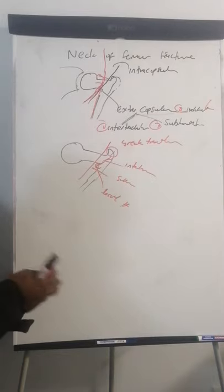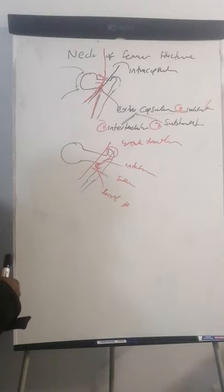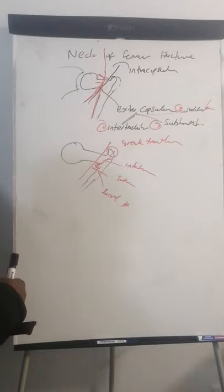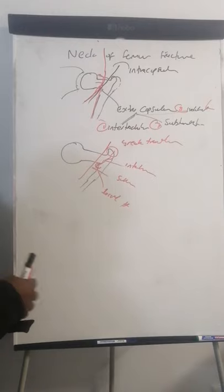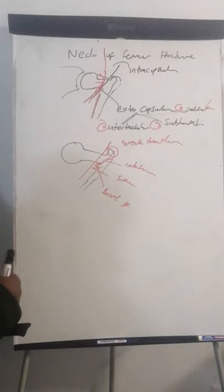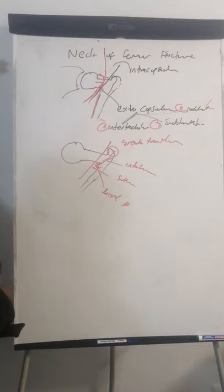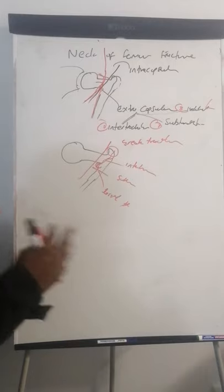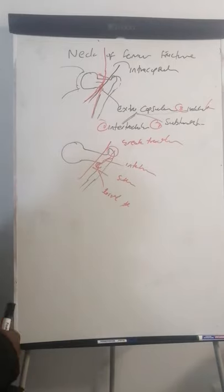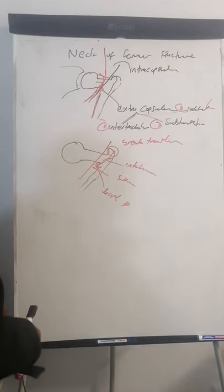For example, take the Weber classification for ankle fractures. A Weber A you can put a backslab for a week, then a full POP, remove it after 8–12 weeks. But a Weber C by definition needs to be operated on because there's a syndesmosis injury. So just saying 'ankle fracture' makes everyone's life difficult — yours and the orthopod's.